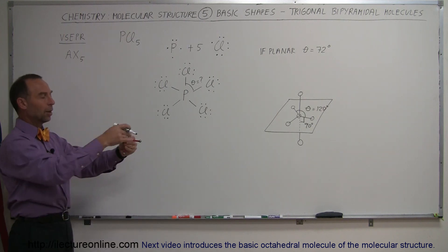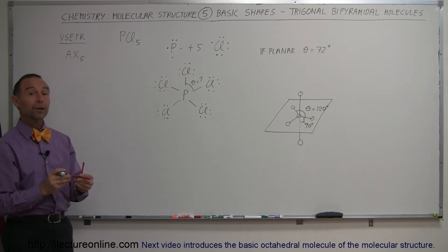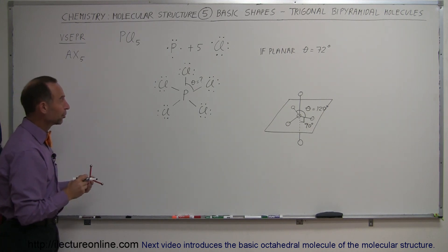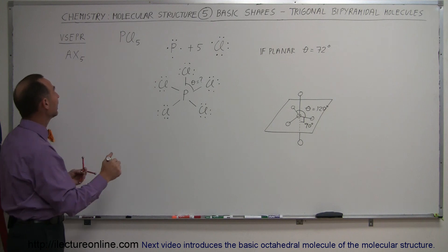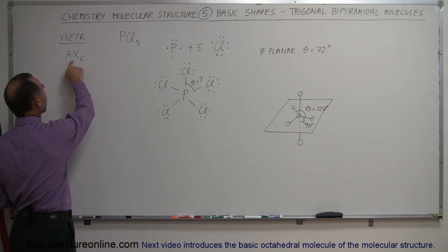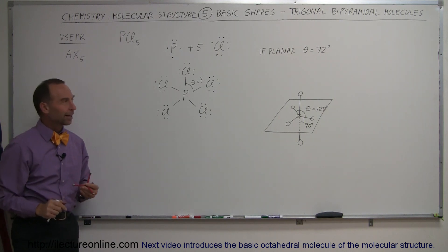three molecules like this in a plane, one straight up, one straight down, and that's what we call the trigonal bipyramidal molecule. So that's the basic shape in the case that you end up with one central molecule and five terminal molecules at the end like that.